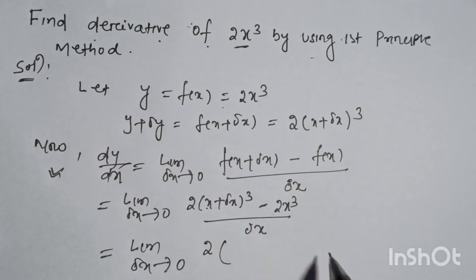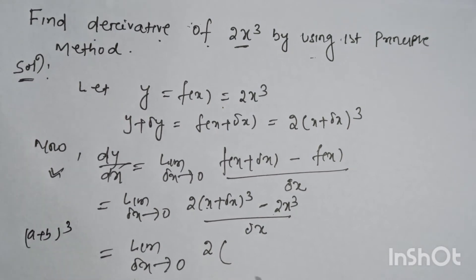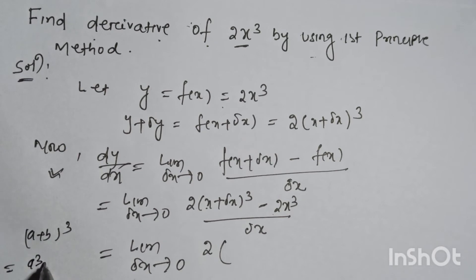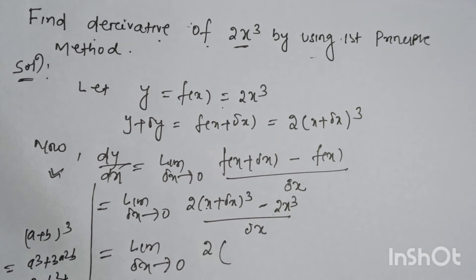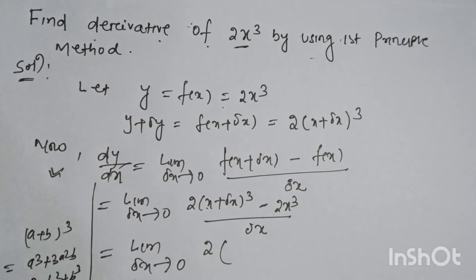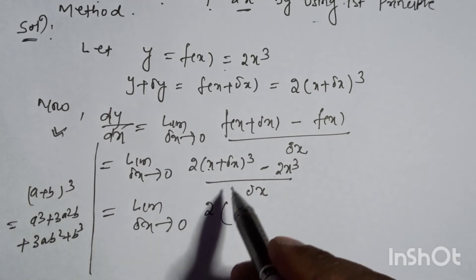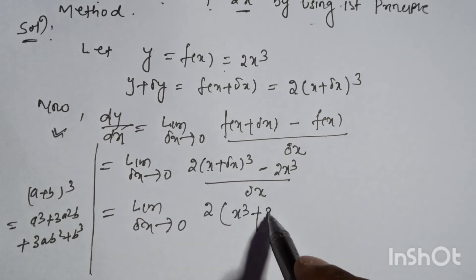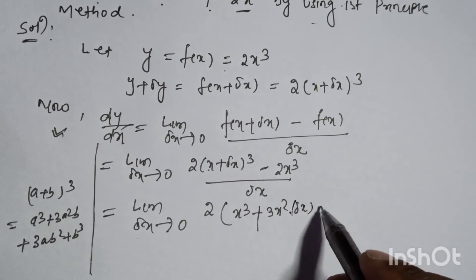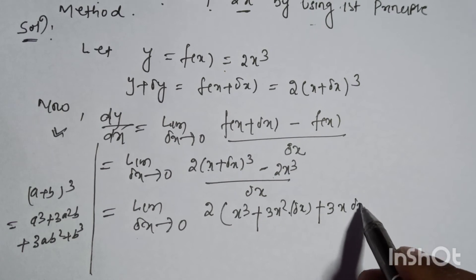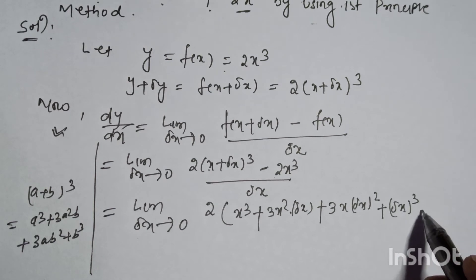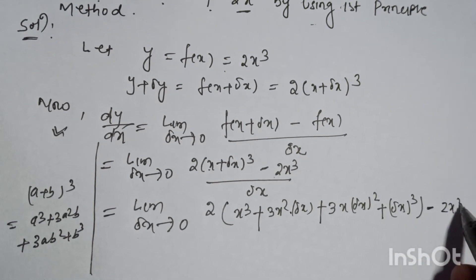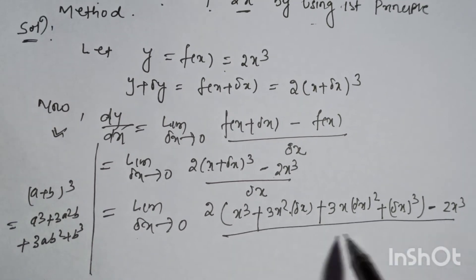We apply the (a + b)³ formula, which is a³ plus 3a²b plus 3ab² plus b³. So that becomes: 2 times [x³ + 3x²·delta-x + 3x·(delta-x)² + (delta-x)³] minus 2x³, all divided by delta-x.